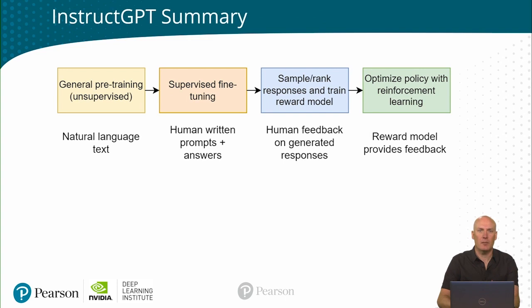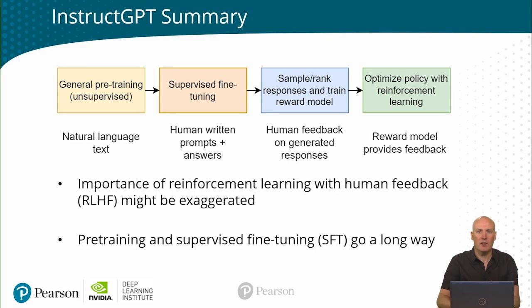Let's now summarize this entire process. We start with pre-training the model to predict the next word. We then fine-tune the model with a prompt and a continuation — for example, questions and answers. This is known as an instruction dataset. We then do reinforcement learning with human feedback by training a reward model, and then using this reward model to automatically train without labeled examples. Note that reinforcement learning with human feedback is not strictly necessary — you can get very good results by just doing supervised fine-tuning with an instruction dataset.